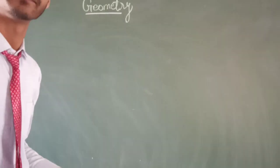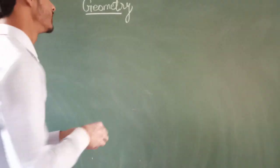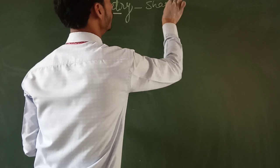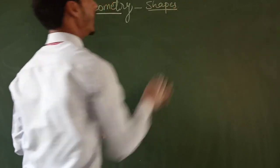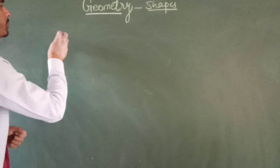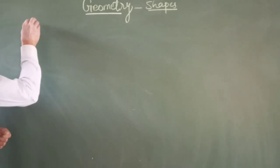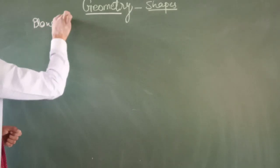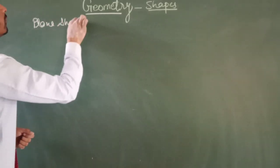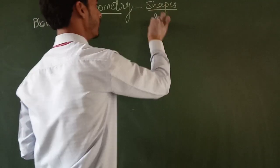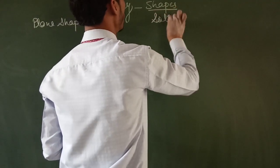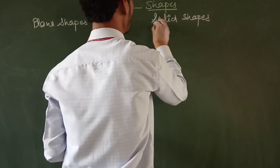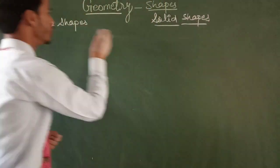Our next topic is Shapes. There are two types of shapes: the first one is Plane Shapes, and the second one is Solid Shapes. We have to learn about Plane Shapes and Solid Shapes. Listen carefully — what are Plane Shapes and what are Solid Shapes?